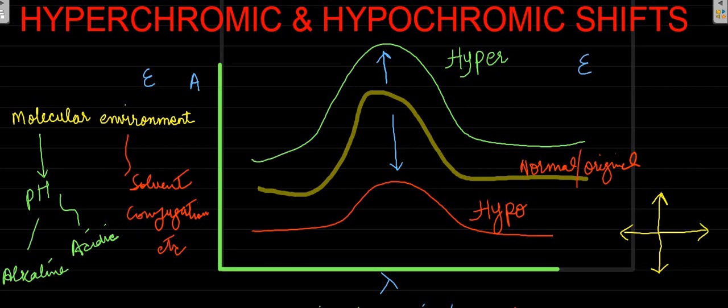Generally, we can say an enhanced value of epsilon or molar absorptivity will be referred to as hyperchromic effect, and a lower value will be referred to as hypochromic effect.